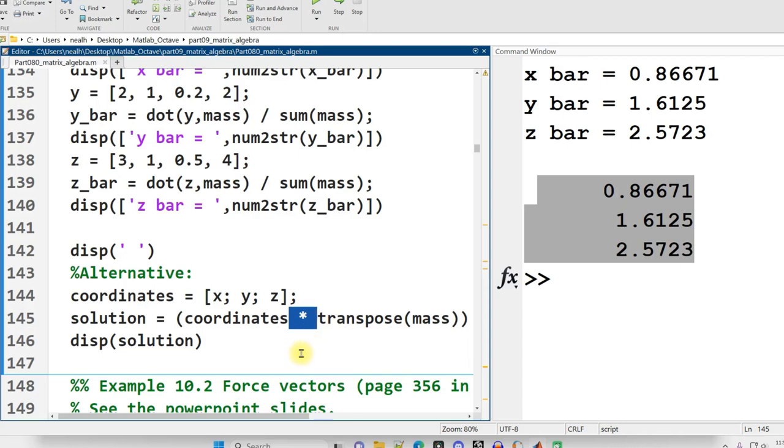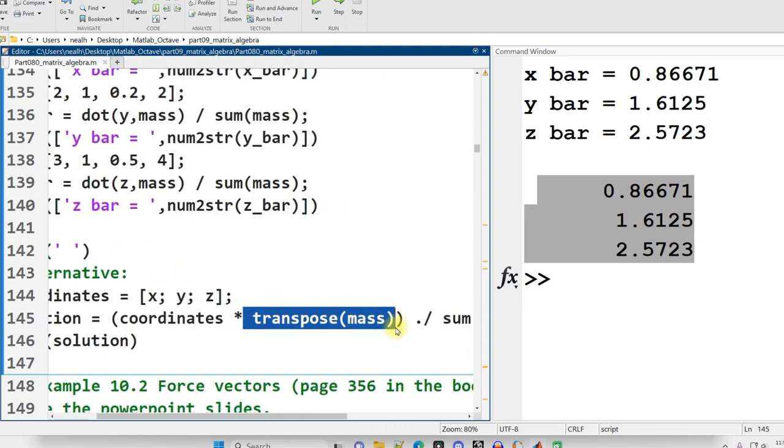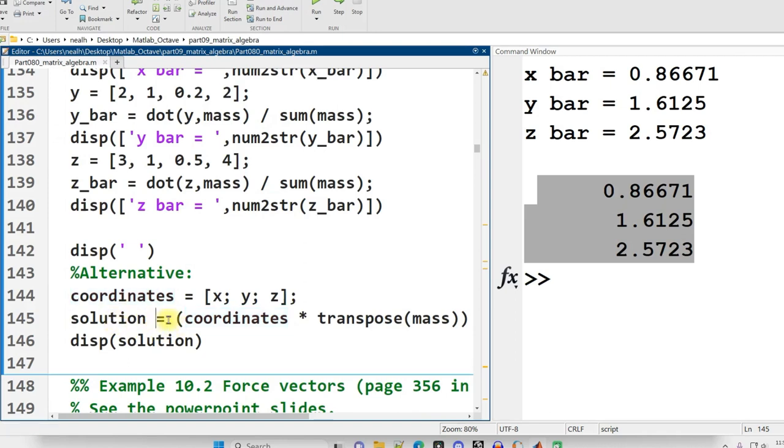Because matrix multiplication is a bunch of dot products. So I did have to put my coordinates into a matrix, and I had to make sure they were organized appropriately. In this case, I have x, y, and z on separate rows. And I did have to transpose the mass, and I could have organized things slightly differently, but this is just how I chose to organize it.